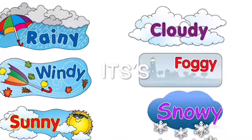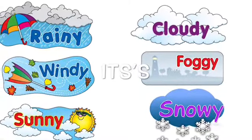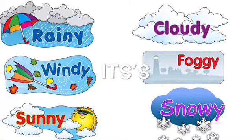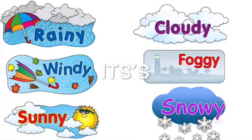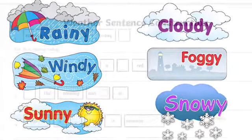The way we describe the weather, we say: it's rainy, it's windy, it's sunny, it's cloudy, it's foggy, or it's snowy.